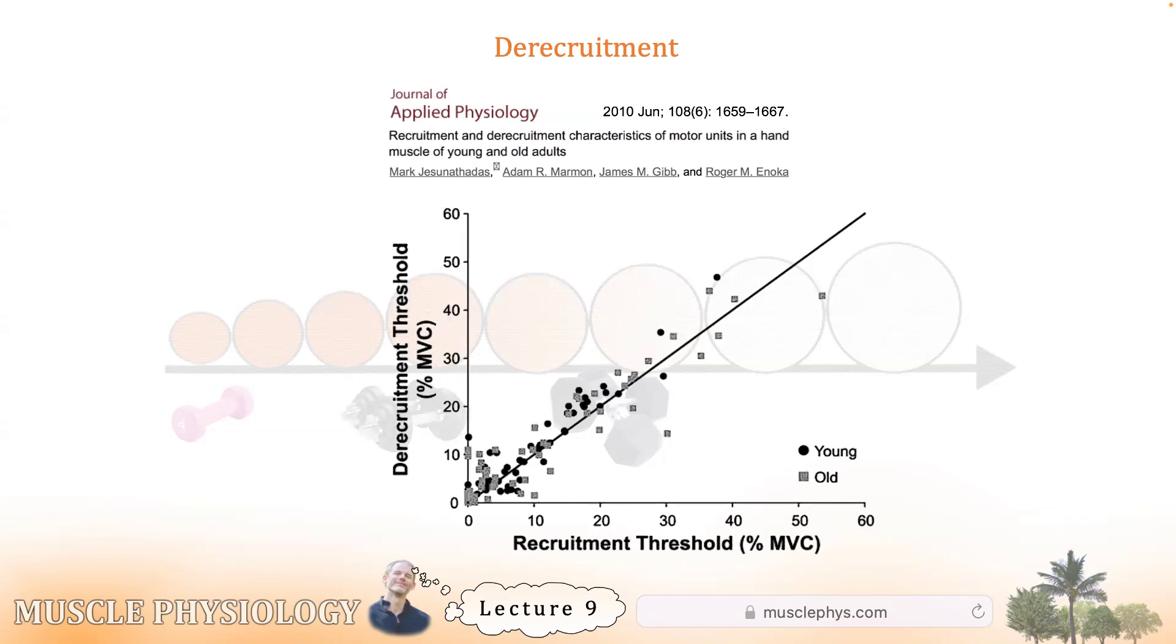And as the figure shows, this happens in older adults too. On the Y axis is the percentage of maximum voluntary contraction and the force thresholds for recruitment and de-recruitment of the motor units, those don't change. The muscle itself may behave a little differently as we age. But across the lifespan, we see this pattern preserved.